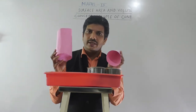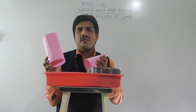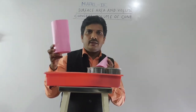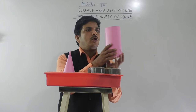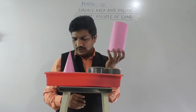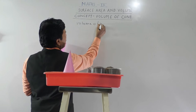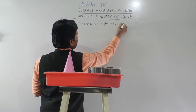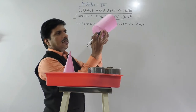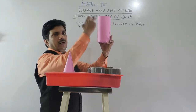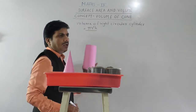We will consider height h. The height of this cylinder and this cone is h, and for radius we always take small r. So two things are the same — height and radius of the right circular cone and right circular cylinder. How do we find the volume of a right circular cylinder? The volume of a right circular cylinder equals the area of the base times height, which is pi r squared, so volume equals pi r squared h.